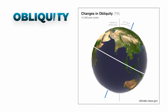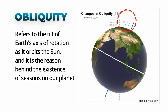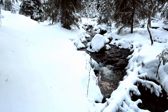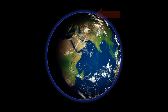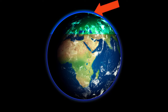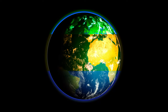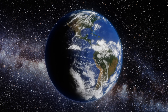The term obliquity refers to the tilt of Earth's axis of rotation as it orbits the Sun, and it is the reason behind the existence of seasons on our planet. Over the past million years, this obliquity has fluctuated within the range of 22.1 to 24.5 degrees. When the tilt angle is larger, it tends to promote phases of deglaciation. Regions at higher latitudes experience a more significant alteration in total solar radiation compared to areas closer to the equator, playing a crucial role in influencing the climate dynamics and patterns of glaciation and deglaciation on Earth.